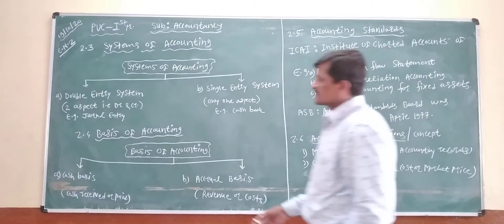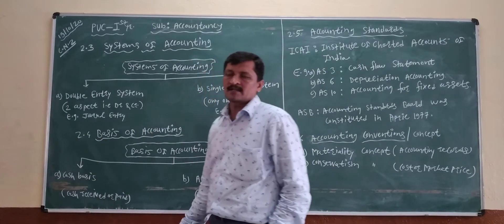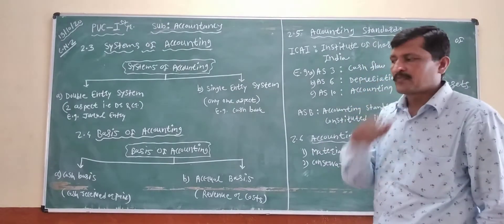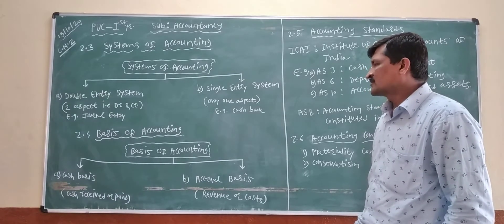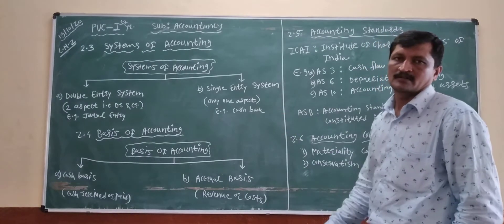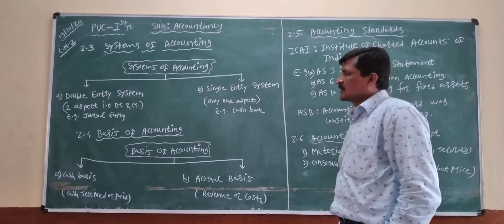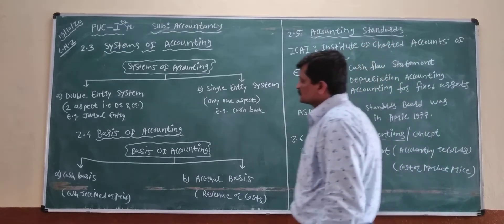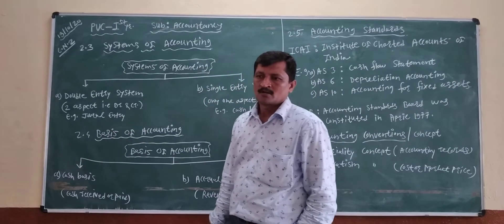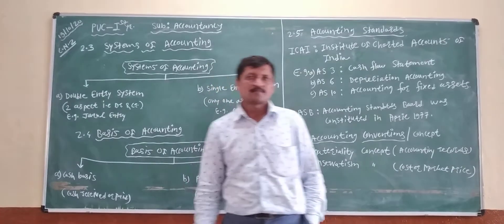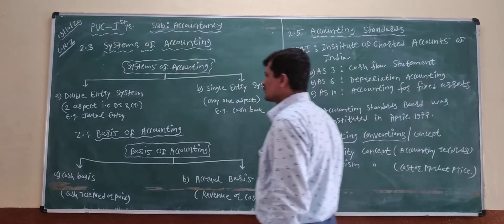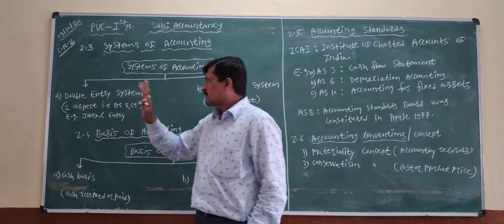Double entry system — for example: Ram started business with cash, rupees 50,000. Cash account debit. Next example: Ram purchased a machine for 50,000 — machinery account debit, cash account credit. That is what will be the double entry system.